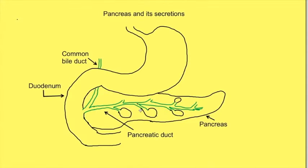Pancreas is both an exocrine and an endocrine gland. Here we will be discussing the exocrine secretions of pancreas.